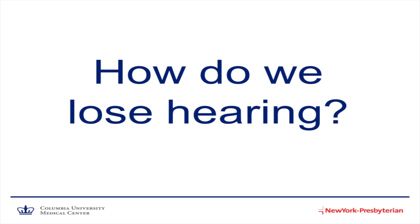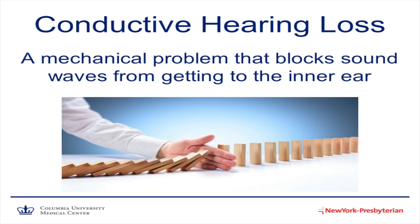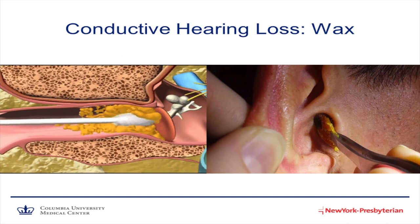So let's move on to how do we lose hearing. There are three types of hearing loss, and we're going to focus on the first two. The first one is called conductive hearing loss, and the second type is called sensorineural hearing loss, and the third one is mixed hearing loss, which is a combination of the first two. First, we're going to focus on conductive hearing loss, which is simply a mechanical problem that blocks sound from getting to our inner ear.